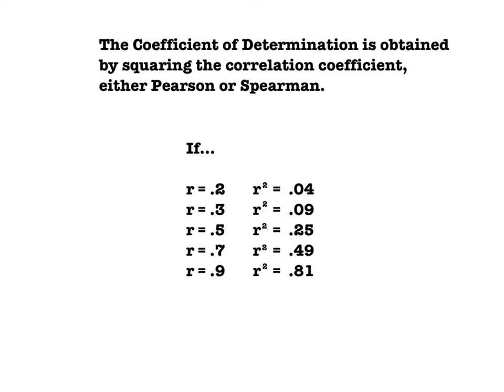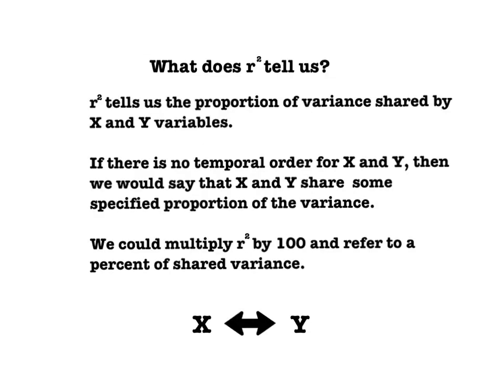What do we learn from r-squared? Well, r-squared can tell us the proportion of variance shared by the X and Y variables. As long as there's no temporal order for X and Y, then we would say that X and Y share some specified portion of the variance. In other words, when we had a correlation of 0.2, the r-squared value was 0.04. If we multiply that r-squared value by 100, it gives us 4%, or 4% of the variance between X and Y is shared.